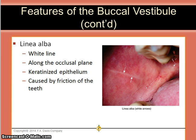Linea alba is a white line usually found along the occlusal plane on the buccal mucosa. It is made of keratinized epithelium and has become keratinized because of the friction of the teeth. If you think you see linea alba, stretch out the tissues or the cheek — if it disappears, it is not keratinized and therefore not linea alba.